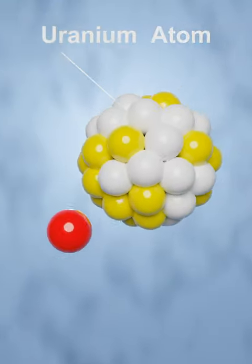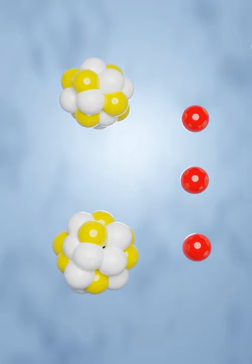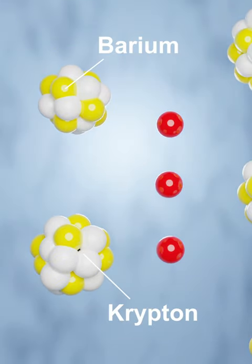When a uranium atom is hit by a neutron, its fission starts. The uranium atom splits into barium, krypton, and three neutrons.